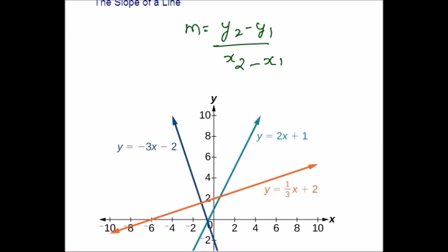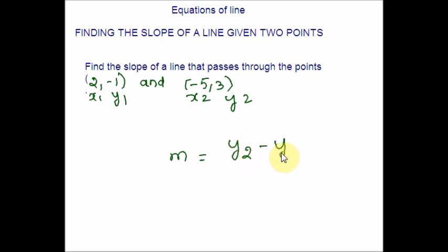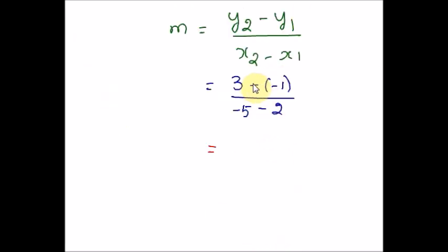Hope you are clear with this. Now let's see an example: finding the slope of a line given two points. A pair of xy coordinates is given. Let me name them x1, y1 and x2, y2. I am going to use the slope formula: m = (y2 − y1) / (x2 − x1). Let us plug in all the values — y2 is 3, y1 is −1. Please note there is already a negative sign in the formula and there is a negative sign in the given point. Now plug in x2 = −5 and x1 = 2. Simplifying: negative times negative is positive, so 3 + 1 = 4. And −5 − 2 = −7. Therefore, the slope for the given points is −4/7.